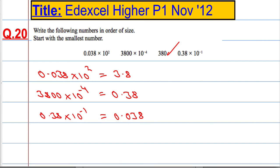Now we need to write them in order of size starting with the smallest. So the smallest number is 0.038. In fact, let's write them using what they were originally, so the smallest is 0.38 × 10⁻¹.